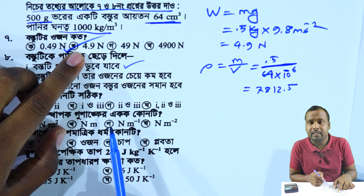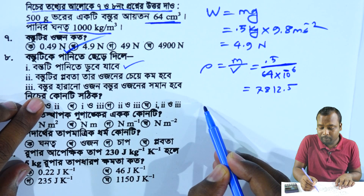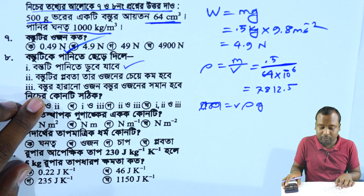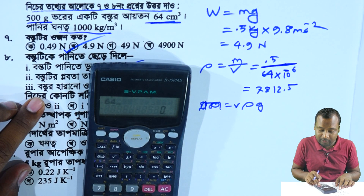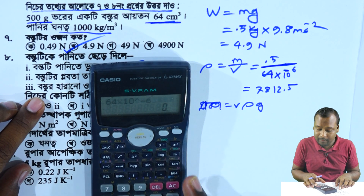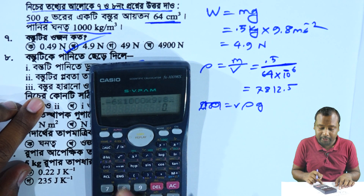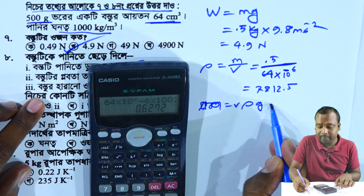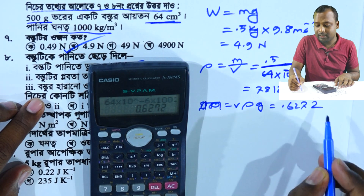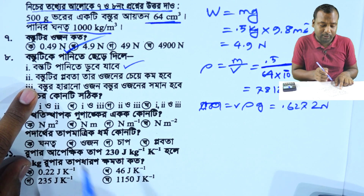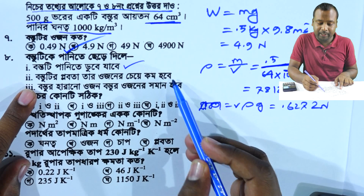We now return to the average number of 4.9. The seniors are equal. The answer is 0.5, 0.80 V will be good. In the calculation, the value is 64 into 10 to the power of minus 6. The gR is 9.8 fixed, so the mantissa is 0.6272 Newtons. Our result is 4.9 Newtons, which is less than that.